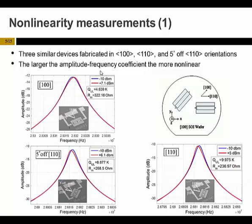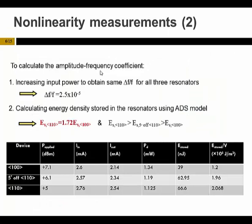You can see the SEM pictures of these resonators, and here we have a schematic showing the relative positions of the 1-0-0 and 1-1-0 resonators on a 1-0-0 SOI wafer. As a measure of nonlinearity, we used the amplitude-frequency coefficient. For this purpose, we increased the input power of each resonator to achieve the same normalized frequency shift for all three resonators.